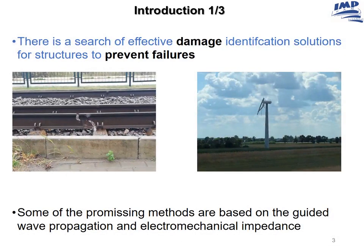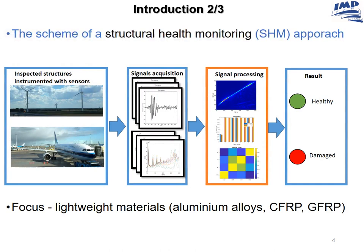We are looking for damage identification and assessment methods in order to prevent failures of various structures. Here are some examples of damaged structures such as a rail track or a broken wind turbine blade. I would like to prevent such events through early detection of damage such as cracks, delaminations, debonds and so on. Some of the promising methods used for this task are based on Guided Wave Propagation and Electromechanical Impedance.